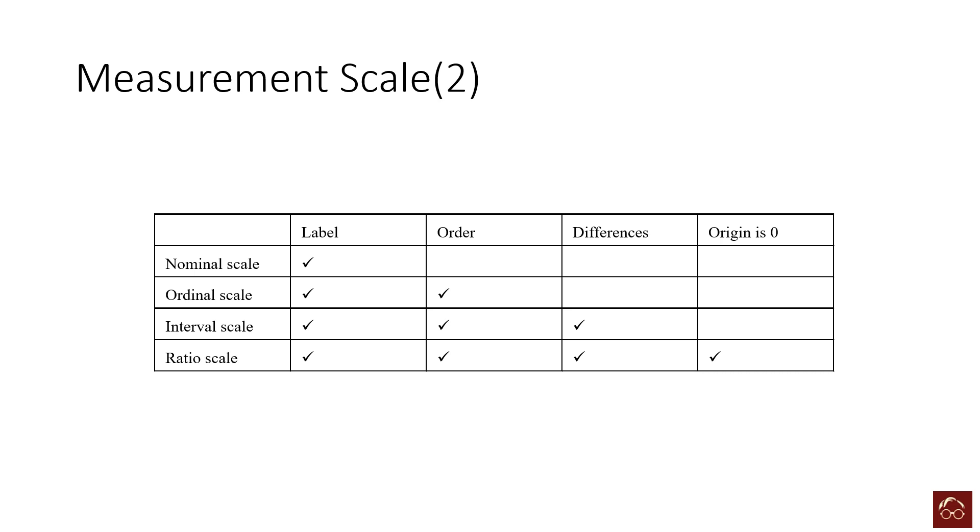In the third case we had label, order, and differences are equal between numbers. And then in ratio we have label, order, differences, and our origin is also zero. So the detail of information about the variable increases.